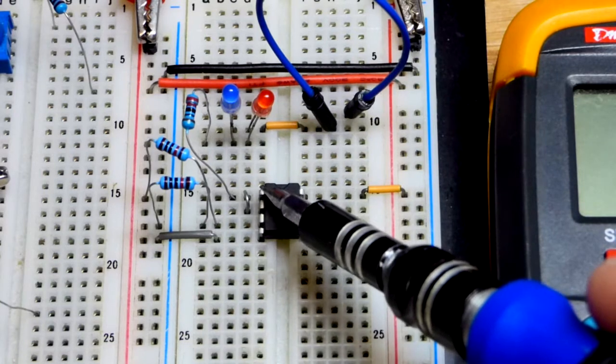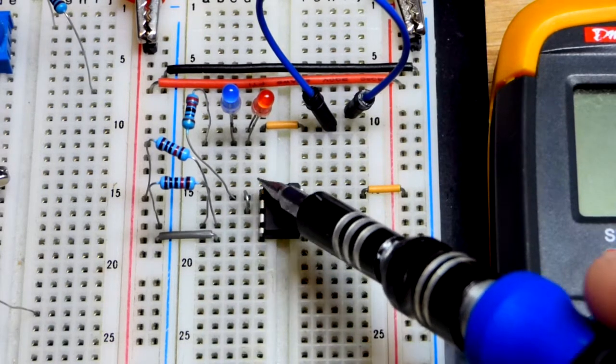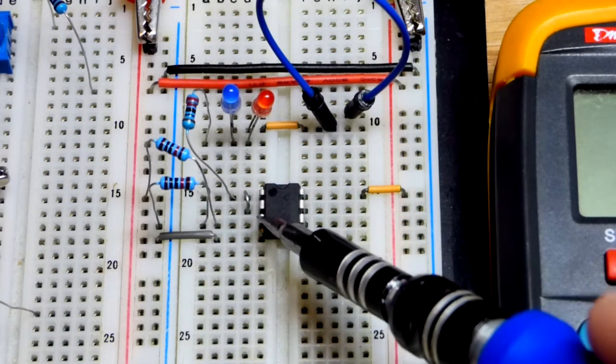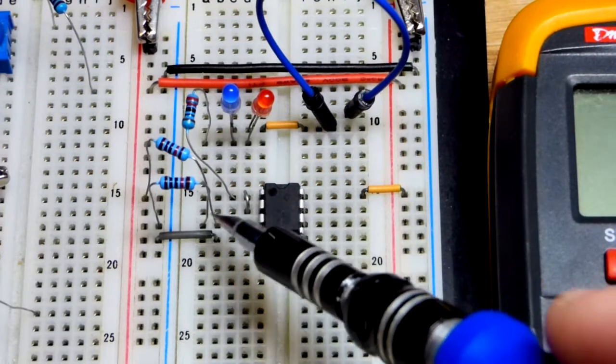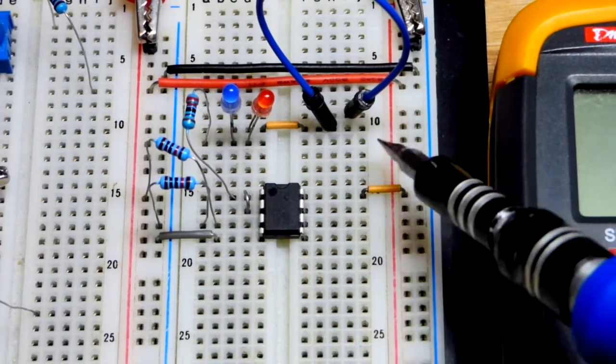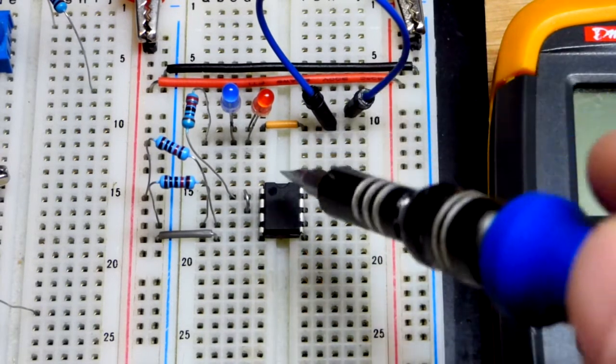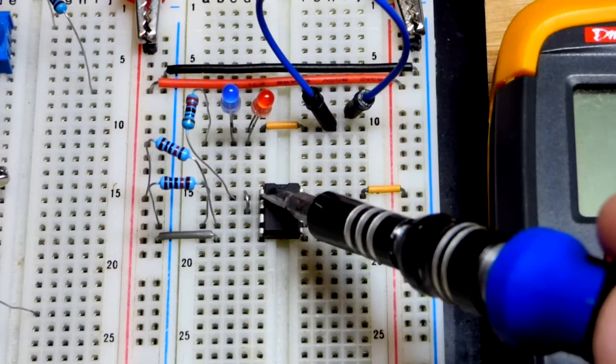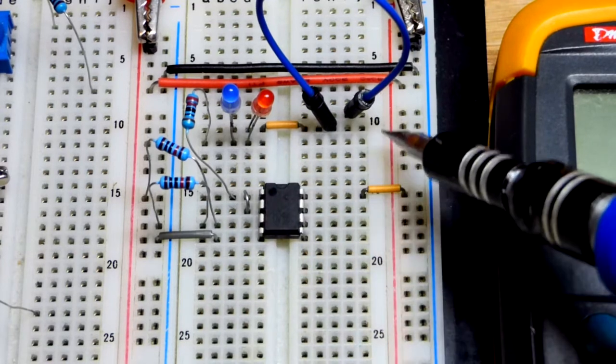We have the op-amp wired as a voltage follower, so the output goes to the inverting input. What that means is the voltage we set to the non-inverting input will be the voltage at the output—five volts, because we're going to use a 10-volt power supply. But we want to split the rail, so instead of five volts we're just going to say that is zero volts.